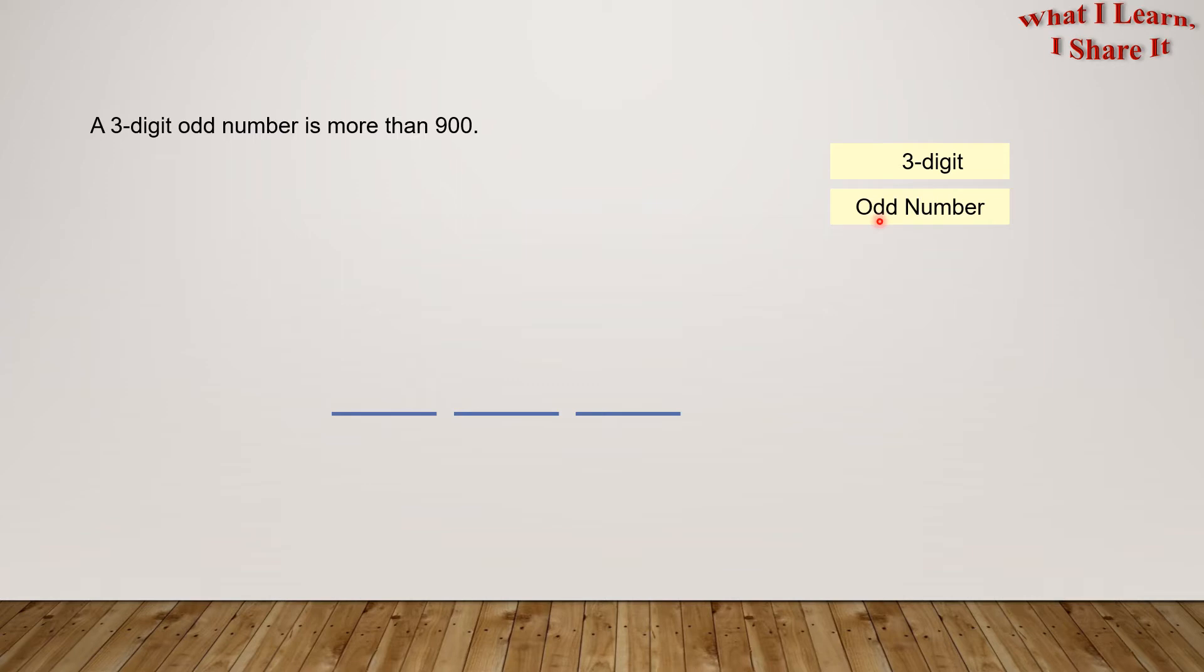Number two: It's an odd number. Since it is an odd number, in the ones place, the possible digits have to be one, three, five, seven, or nine.